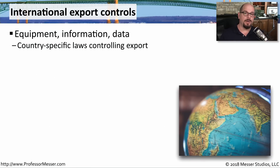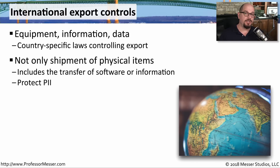When you're working with equipment or software inside your own country, it may be relatively straightforward to understand how all of that information is maintained. But if you ever need to send any of that information to another country, there may be specific rules and regulations on what happens with all of that hardware and software. These days, international export controls not only apply to hardware sent to another country, but also to the data sent there. Many countries have created significant regulations associated with personally identifiable information — what information may leave the country and what information must stay.